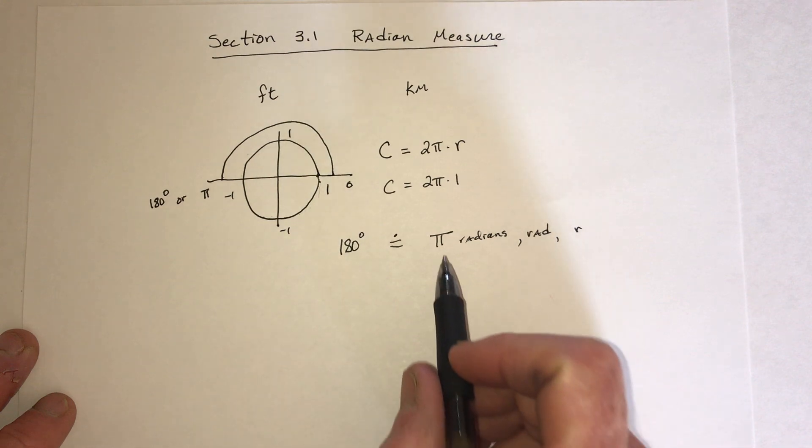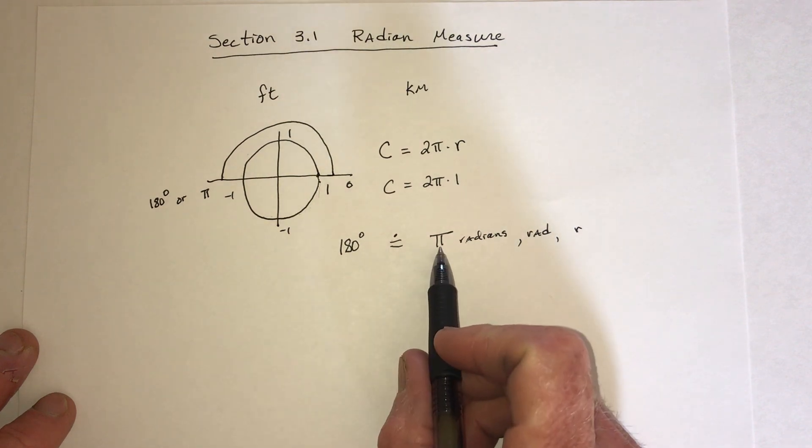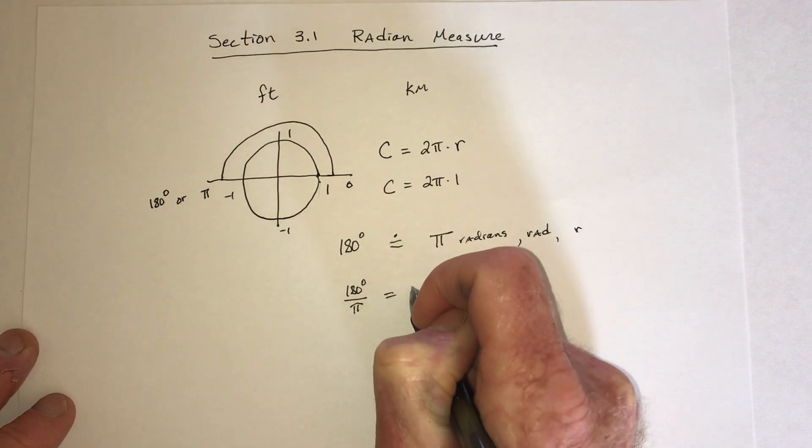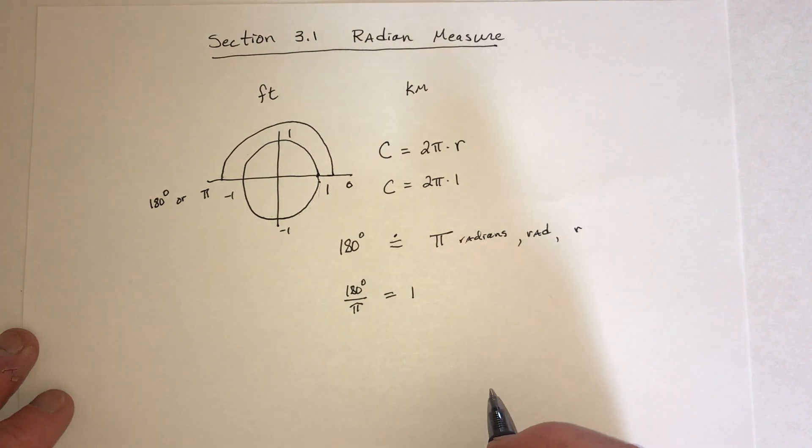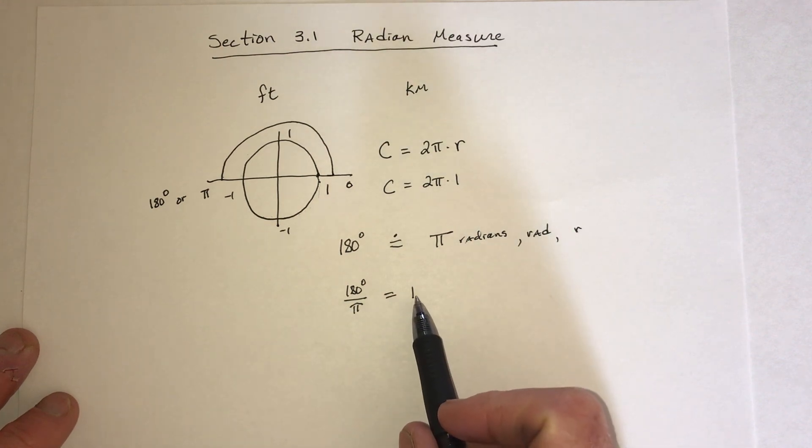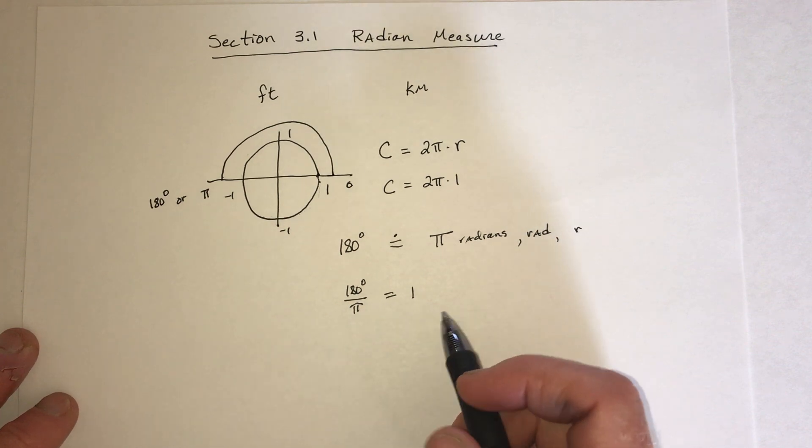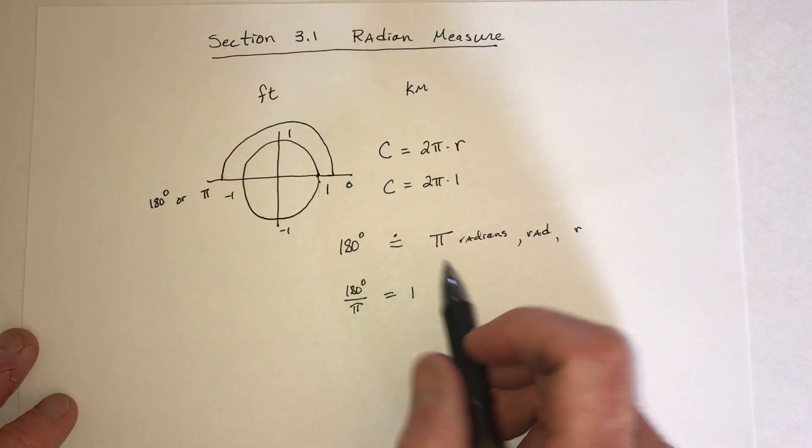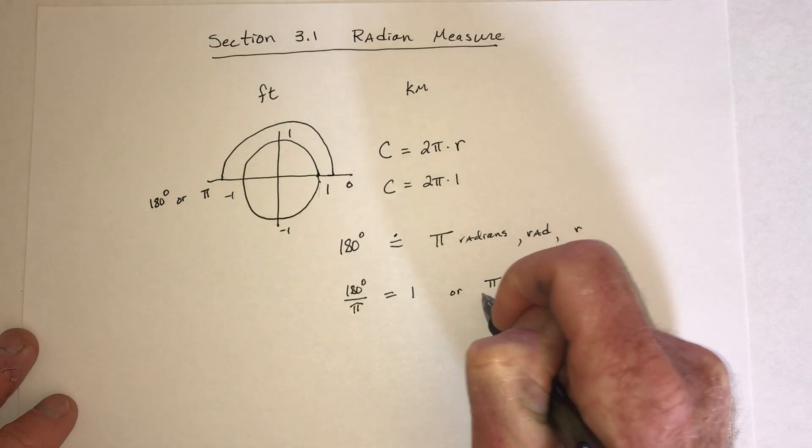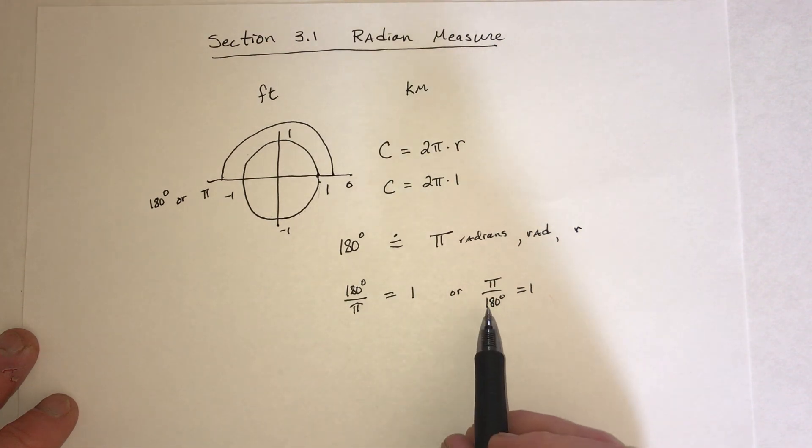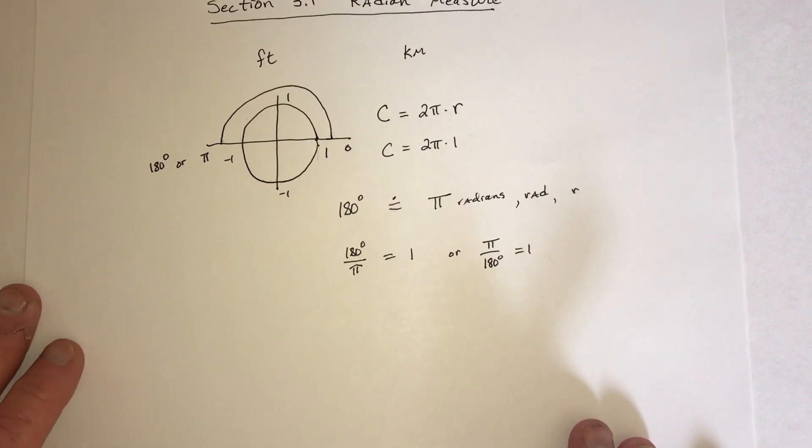Now, how do you convert? Well, if you take this equation right here, and you divide both sides by pi, then 180 divided by pi equals 1. So if you multiply anything by 180 over pi, it's the same thing as multiplying by 1. So it will change the system without actually changing the value. Or, I could have divided the other way, divide both sides by the 180. So pi over 180 is also equal to 1. And these two little fractions, that's the Rosetta Stone. That's what you use to convert between the two.